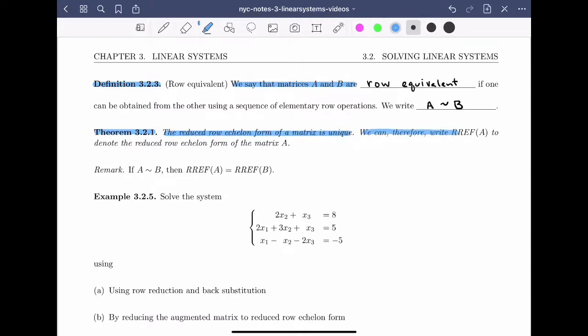We can therefore write RREF to denote the reduced row echelon form of the matrix A. So if A is row equivalent to B, then that means that A and B must have the same reduced row echelon forms.